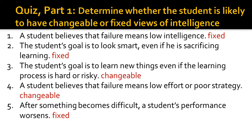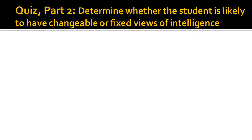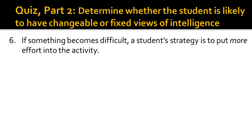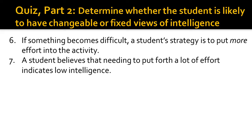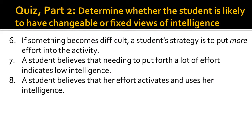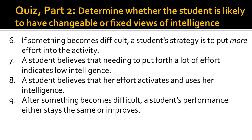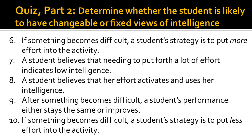Let's try five more to make sure you understand these concepts. Just like before, label each one as either changeable or fixed. Number six: if something becomes difficult, a student's strategy is to put more effort into the activity. Number seven: a student believes that needing to put forth a lot of effort indicates low intelligence. Number eight: a student believes that her effort activates and uses her intelligence. Number nine: after something becomes difficult, a student's performance either stays the same or improves. Number ten: if something becomes difficult, a student's strategy is to put less effort into the activity.